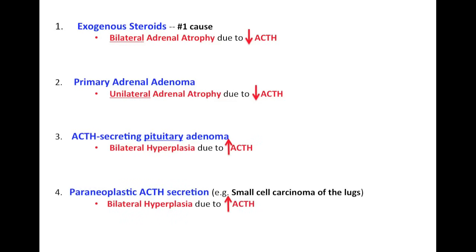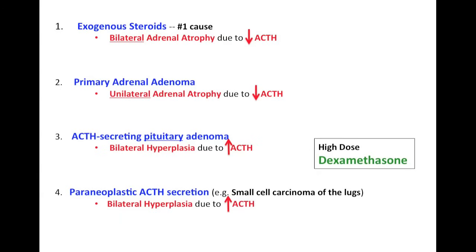The next cause is paraneoplastic ACTH secretion — for example, small cell carcinoma of the lungs. The tumor elsewhere is secreting too much ACTH, also leading to bilateral hyperplasia of both adrenal glands. To differentiate between pituitary adenoma and paraneoplastic ACTH secretion — since both present with bilateral hyperplasia and increased ACTH — we give the patient a high dose of dexamethasone. High-dose dexamethasone suppresses ACTH secretion from a pituitary adenoma, but not from paraneoplastic ACTH secretion.